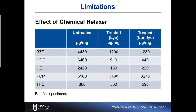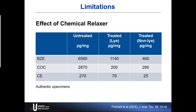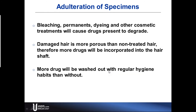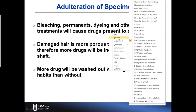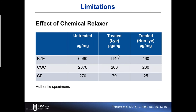The previous table showed fortified samples, but these are authentic specimens — hair specimens from users of cocaine. Looking at the untreated results, we see significant amounts of cocaine and cocaine metabolite. Then with the lye treatment, we got a significant reduction of cocaine and metabolites, and a significant reduction with the non-lye as well. We got even more of an effect with authentic hair specimens.